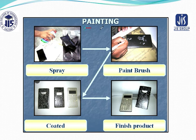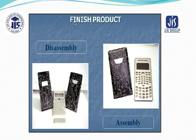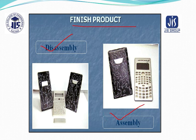The next process involves painting: first spray, then use a paint brush, then apply coating, and finally you obtain your finished product — such as a calculator cover or a phone back cover. When disassembling, you can see the front portion of a calculator and the back cover of a mobile phone as finished products.